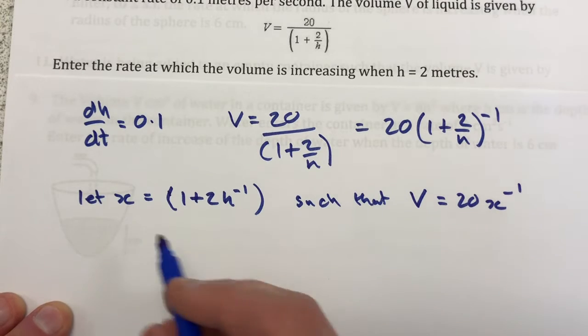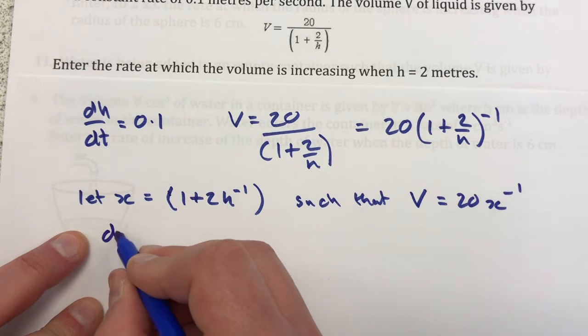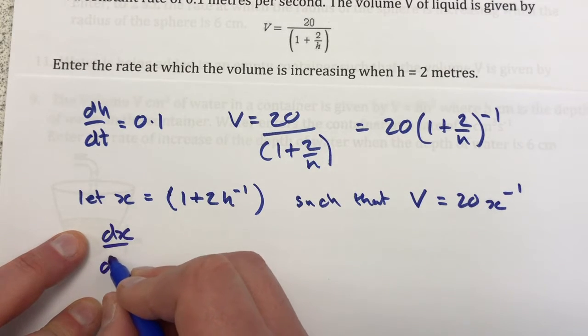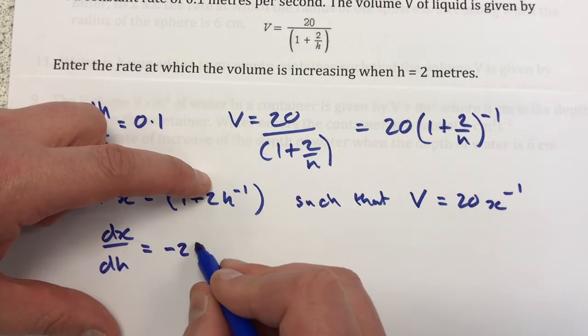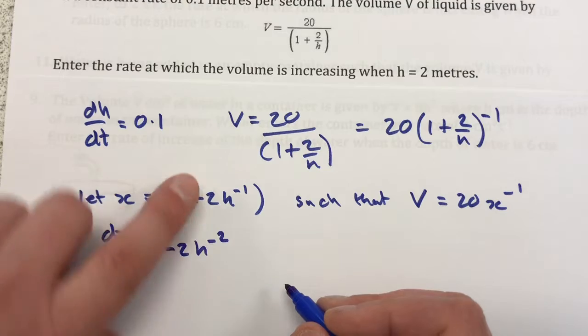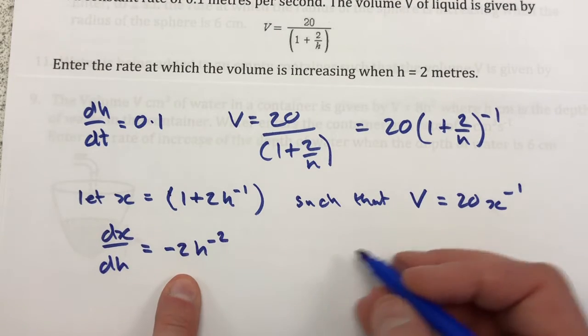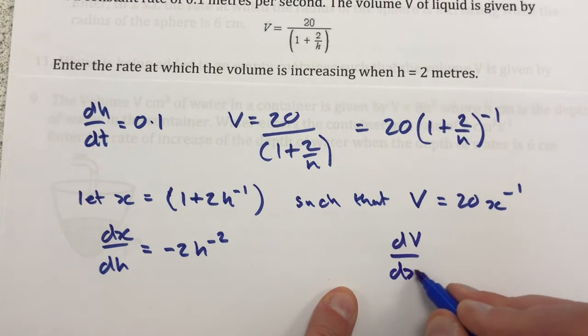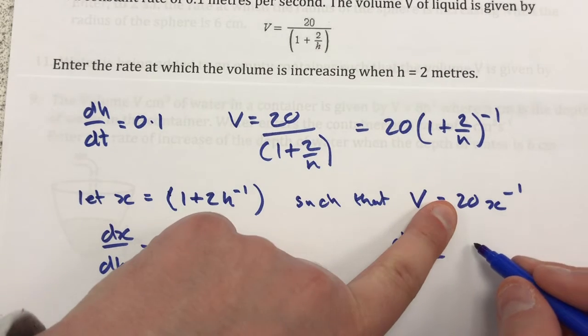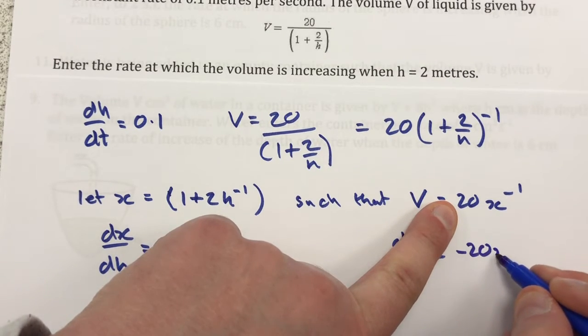Now what we can do is differentiate x with respect to h in order to get minus 2h to the minus 2, and then we can differentiate V with respect to x in order to get minus 20x to the minus 2.